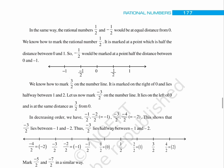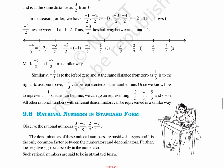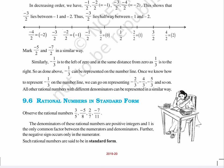In decreasing order, we have minus 1 upon 2, minus 2 upon 2 which is equal to minus 1, minus 3 upon 2, minus 4 upon 2 which is equal to minus 2. This shows that minus 3 upon 2 lies between minus 1 and minus 2. Thus, minus 3 upon 2 lies halfway between minus 1 and minus 2. Mark minus 5 upon 2 and minus 7 upon 2 in a similar way.